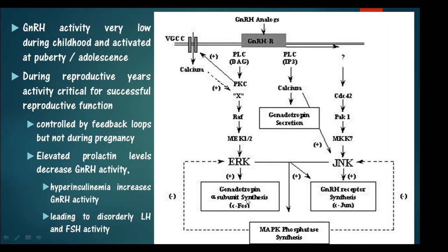The three systems activated by ERK and JNK are: gonadotropin alpha subunit synthesis, GnRH receptor synthesis, and MAP kinase phosphatase synthesis.